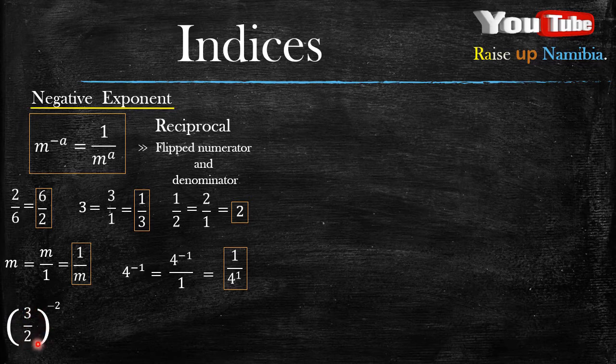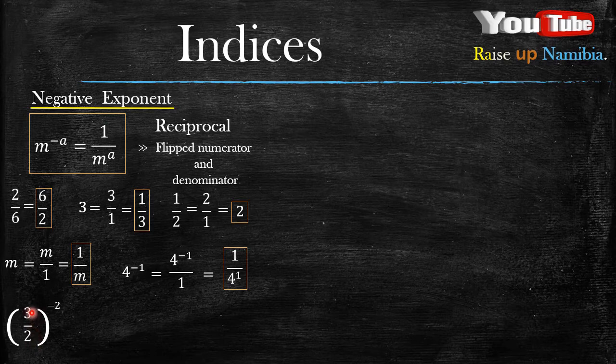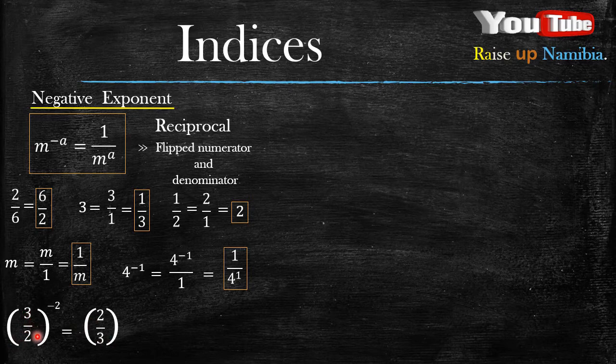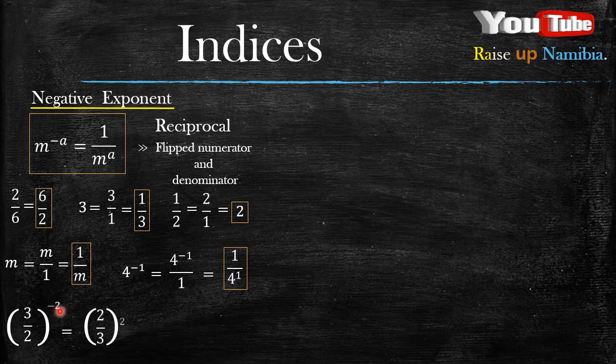So look for the 3 over 2's reciprocal. What is the reciprocal for 3 over 2? It's 2 over 3. Now if you find the reciprocal for 3 over 2, this negative 2, which is our exponent, becomes a positive 2.